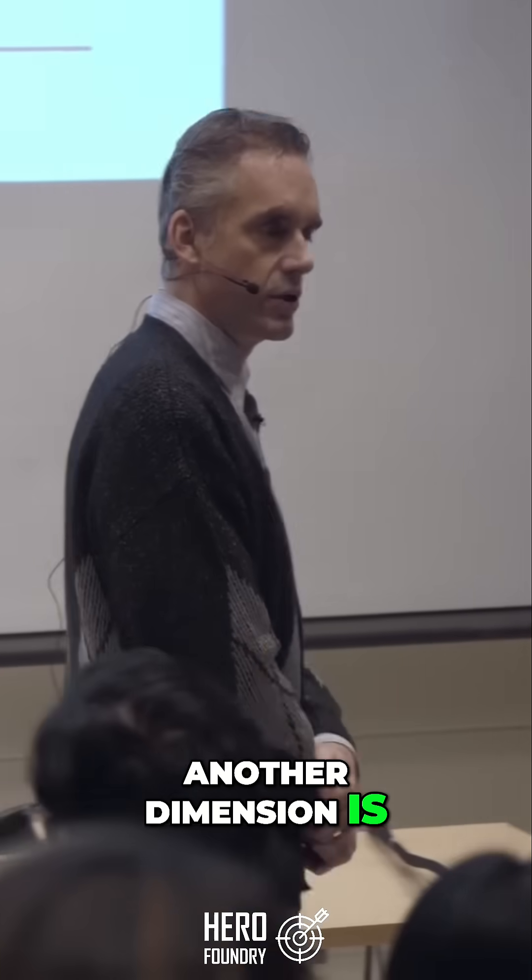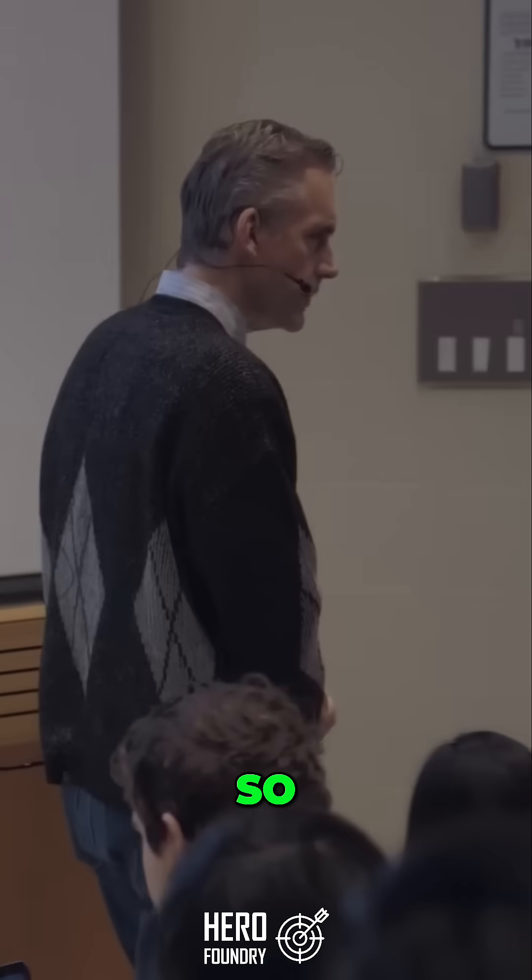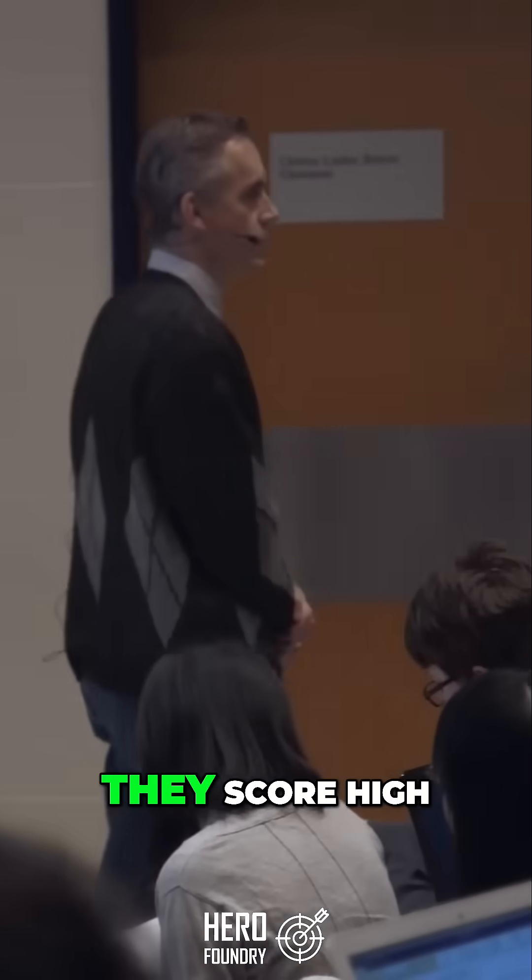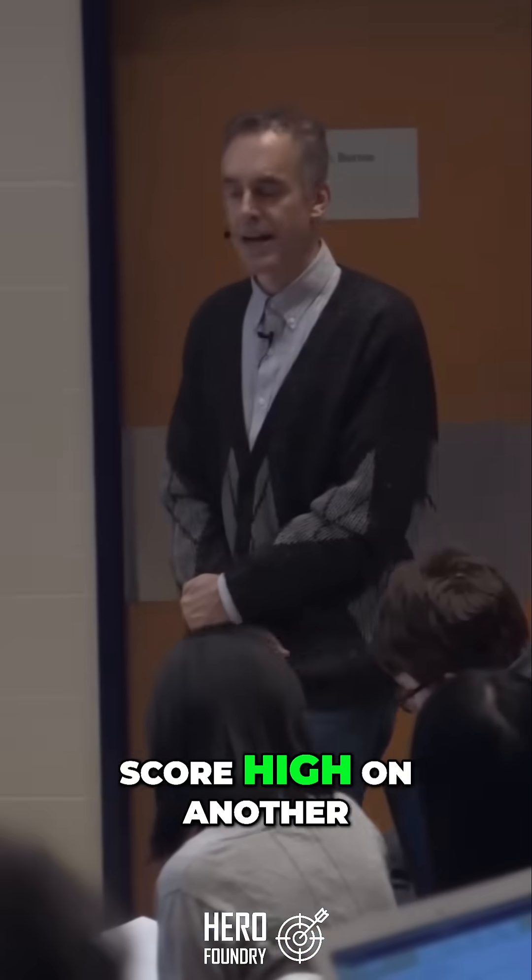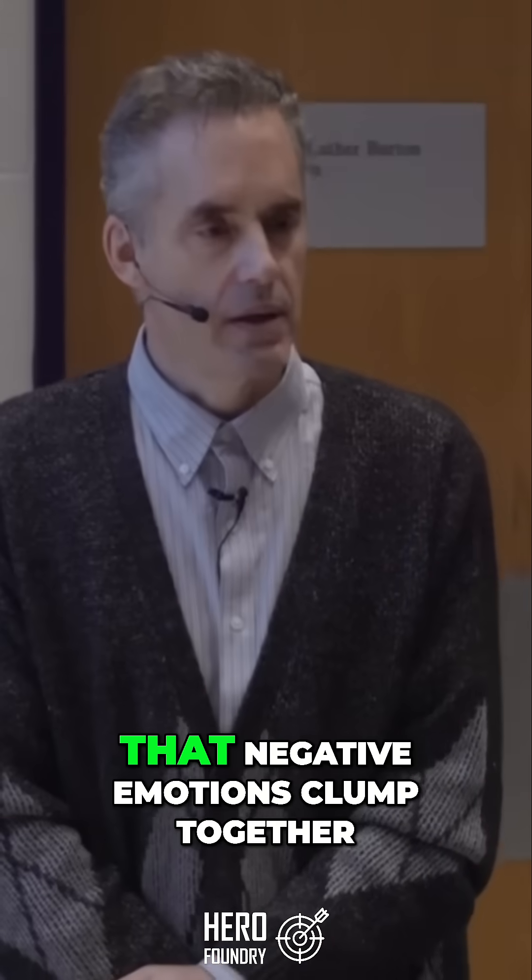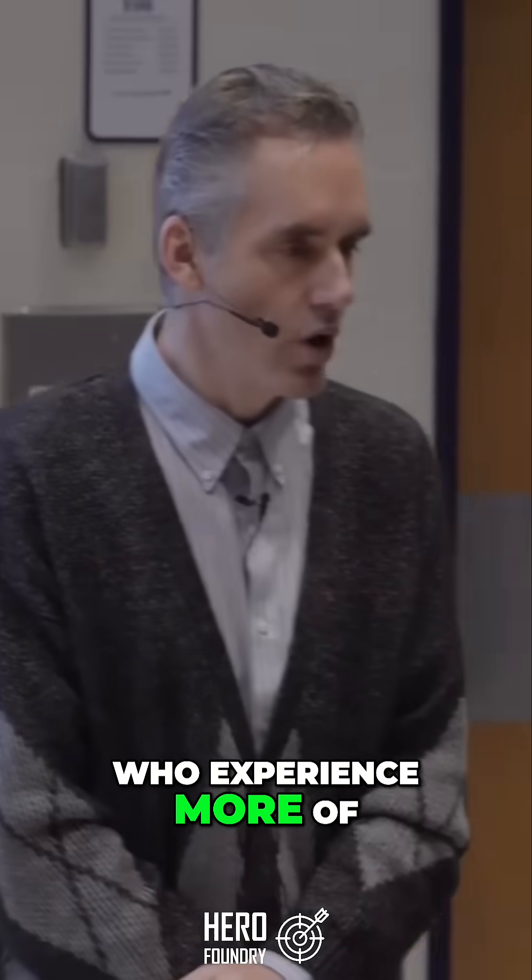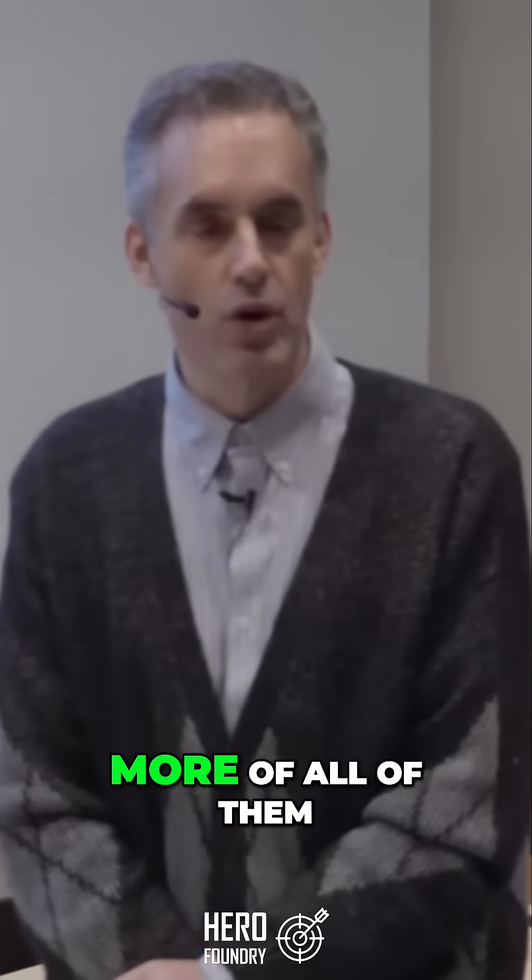Another dimension is neuroticism. It's a negative emotion dimension. So if you ask someone if they're anxious, and they score high, say on a scale of one to seven, they're also likely to score high on another item that says that they're sad. And it turns out that negative emotions clump together, so people who experience more of one negative emotion have a propensity to experience more of all of them.